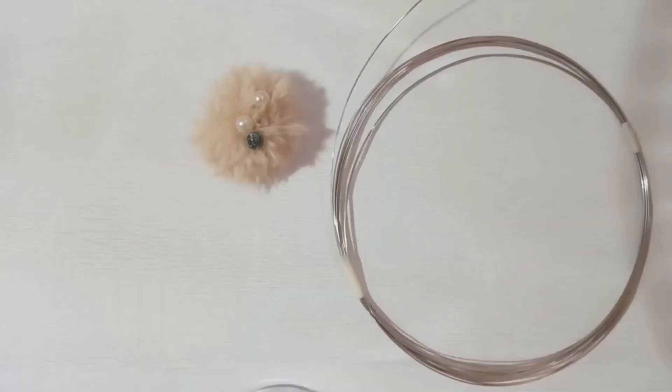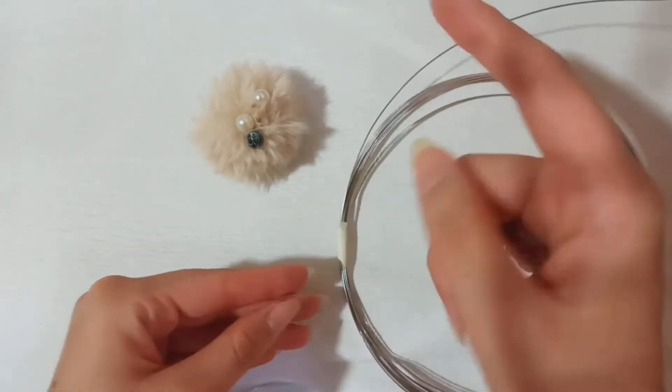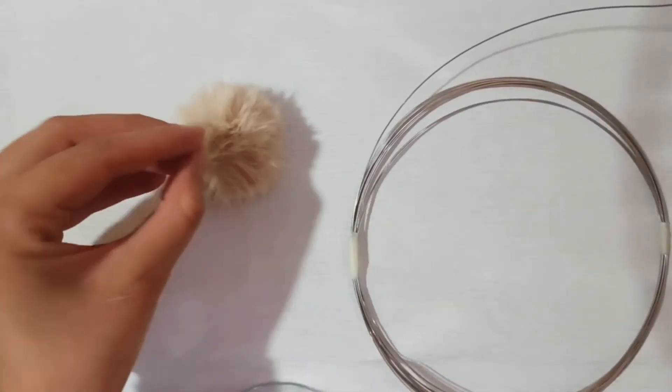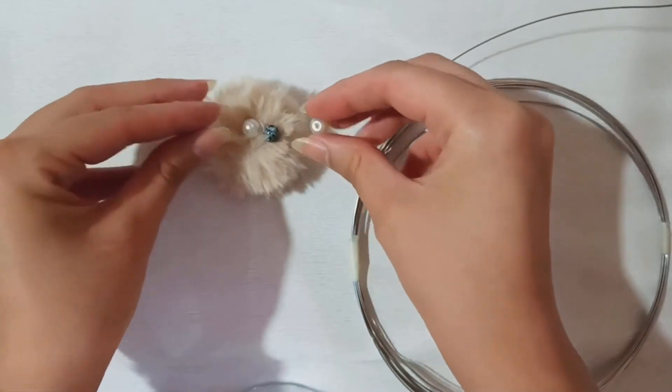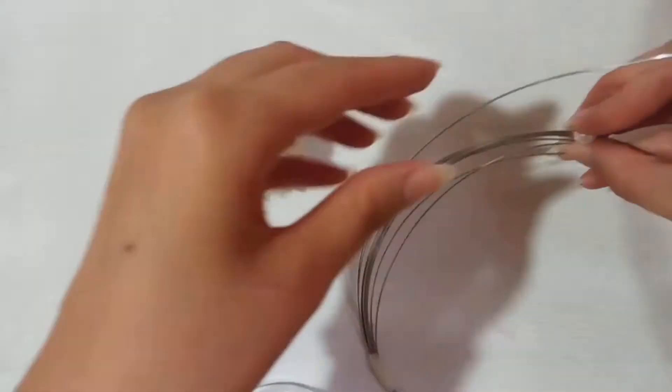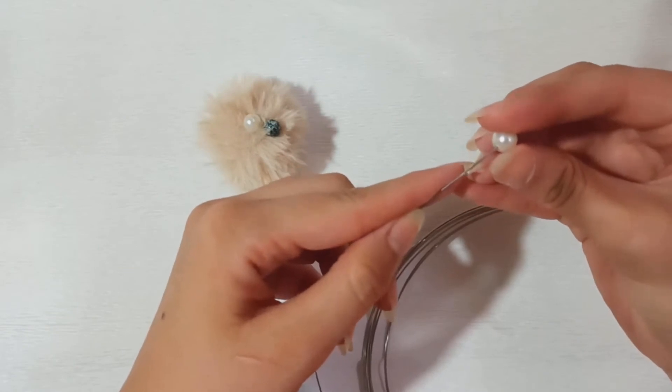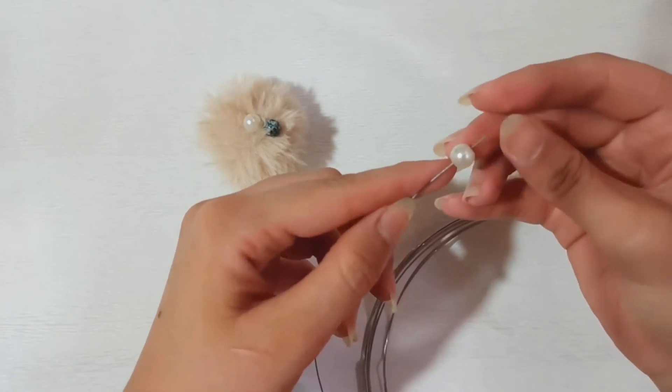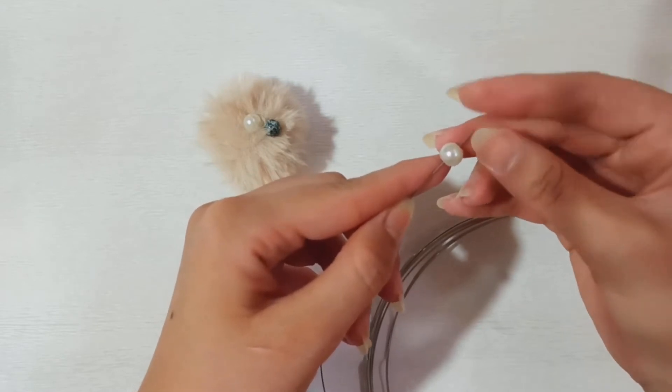Pick a 0.8 millimeter steel wire and one bead or stone. Pass your wire through the bead and leave about a half centimeter, then wrap it all around your bead to keep it tight.